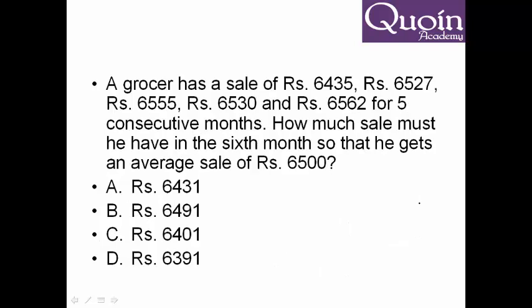Similar concept. Six numbers and the average of all six numbers is 6500. You want to find the sixth number. We see how far all the numbers are from the average. This works when the numbers are close by. 6435 is minus 65 as compared to the average. 6527 is plus 27. 6555 is plus 55. 6530 is plus 20. And 6562 is plus 62.